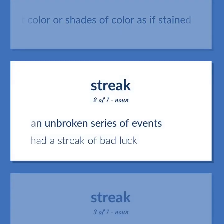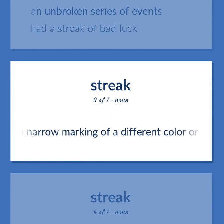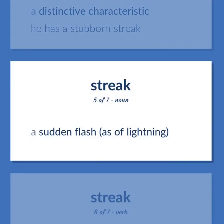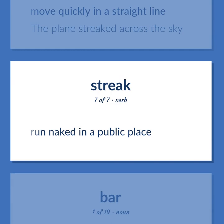Streak: an unbroken series of events — 'Had a streak of bad luck.' A narrow marking of a different color or texture from the background. A distinctive characteristic — 'He has a stubborn streak.' A sudden flash, as of lightning. Move quickly in a straight line — 'The plane streaked across the sky.' Run naked in a public place.